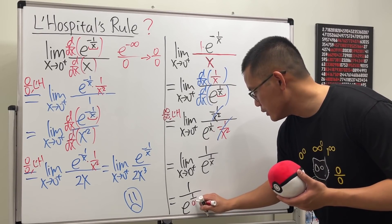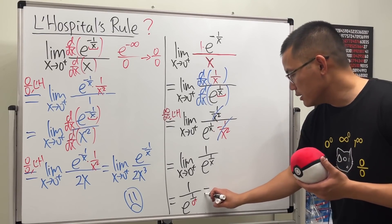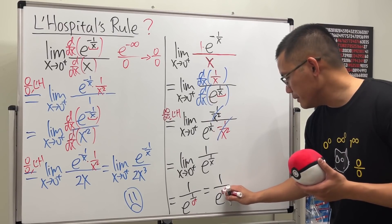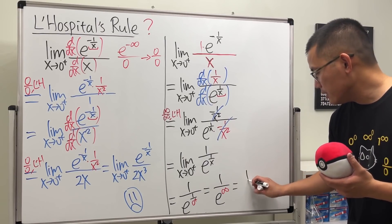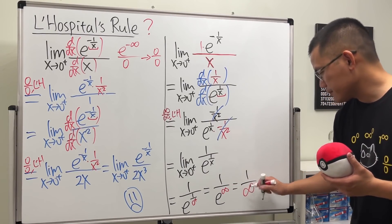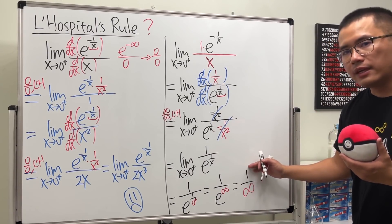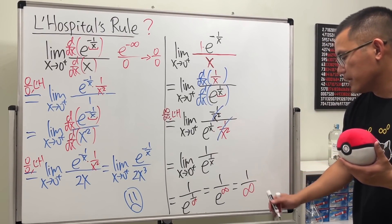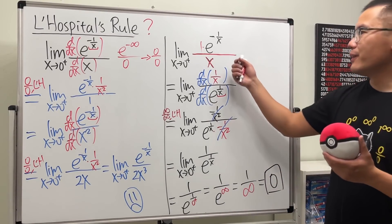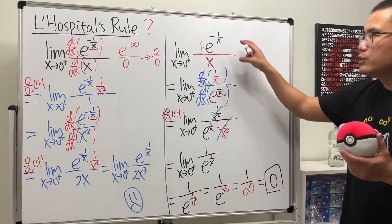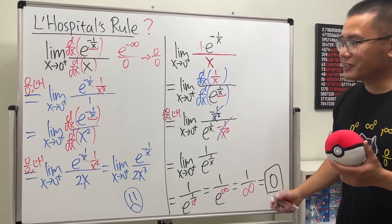Now putting 0 plus in: 1 over 0 plus is infinity, so this is 1 over e to the infinity. Since e is bigger than 1, e to the infinity is infinity. So we have 1 divided by infinity, which gives us 0. The answer for this limit is equal to 0. You just have to do the algebra first before applying L'Hôpital's rule.